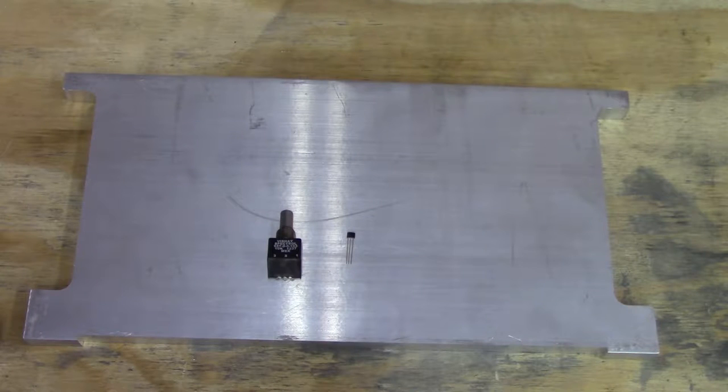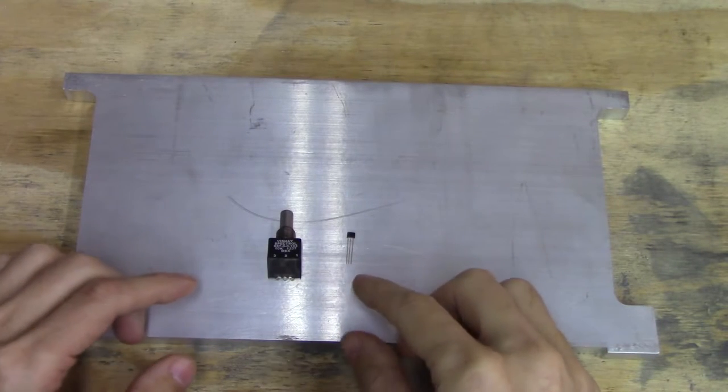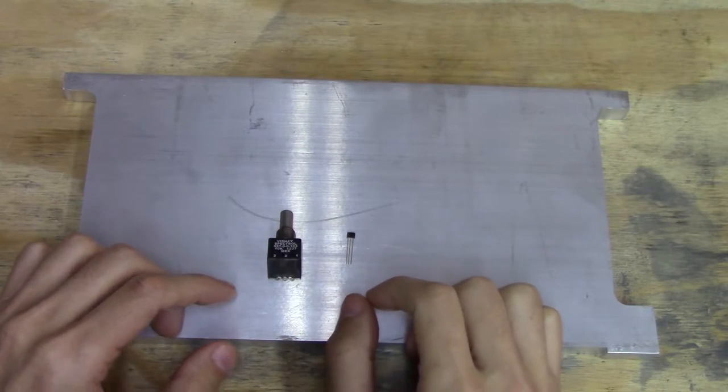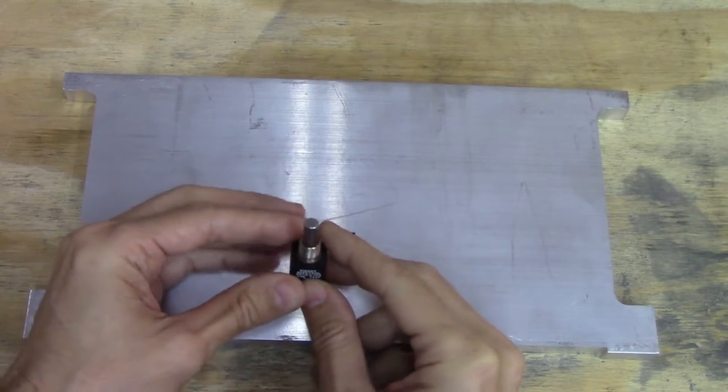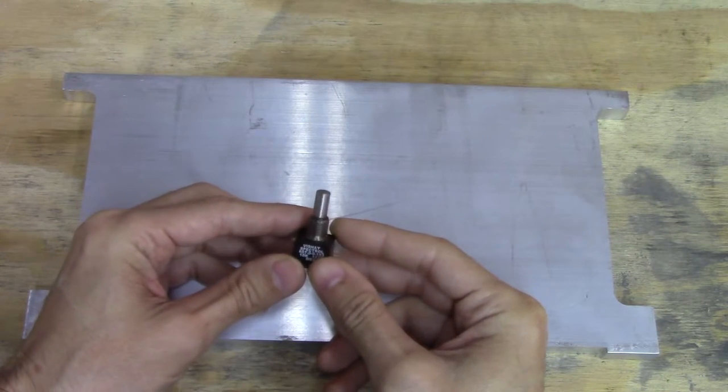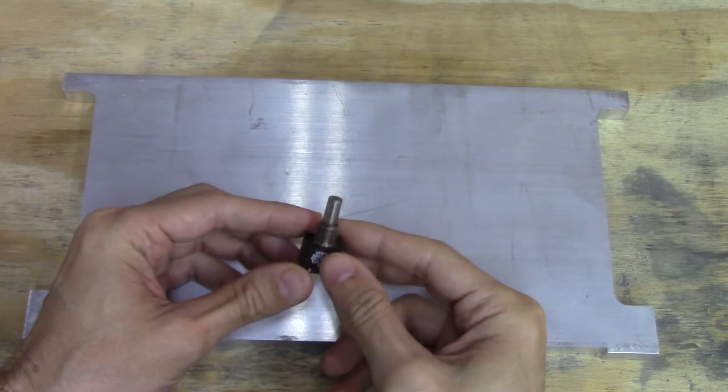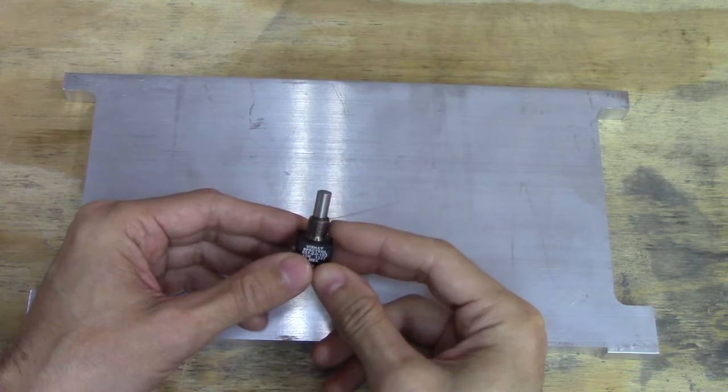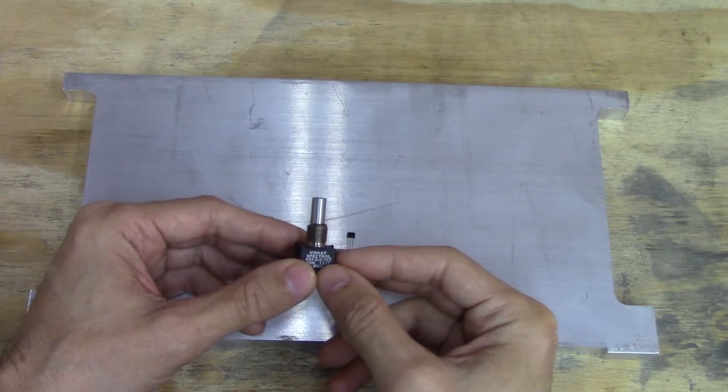I'm going to go over what the advantages and disadvantages are of each one. So this is just a regular potentiometer and I'll post a wiki link for you guys to check out so that you can understand how these things function.